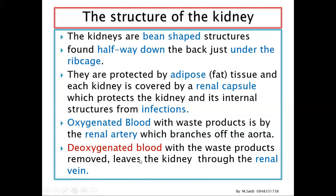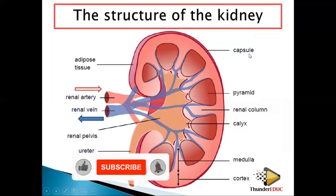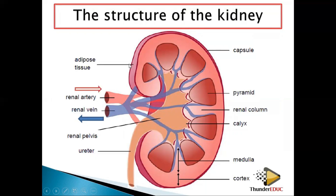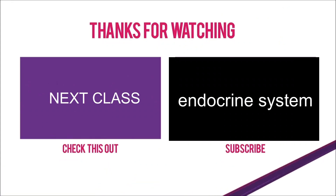The cleaning of blood takes place inside the kidney. Looking at the kidney's structure, you have the outer renal capsule, the adipose tissue layer, the renal artery bringing blood in, and the renal vein taking blood out. Once blood is purified, the waste is collected and moves to the renal pelvis, then through the ureter, into the bladder, through the urethra, and out of the body. The structural and functional unit of the kidney is the nephron.